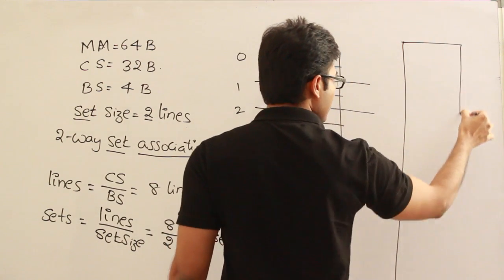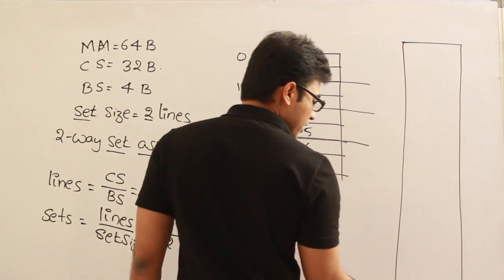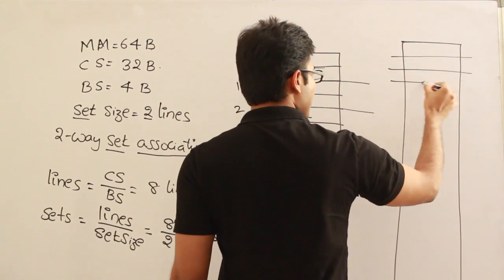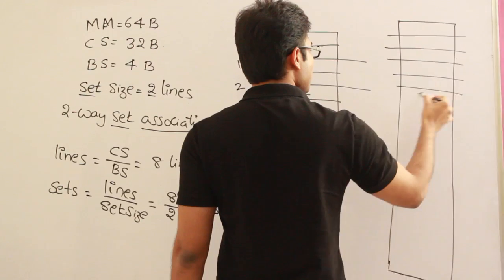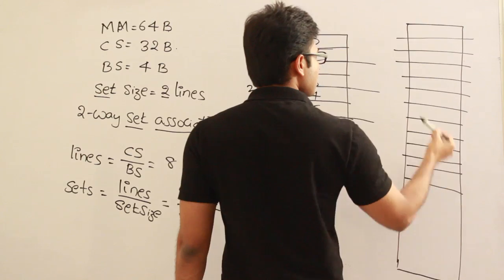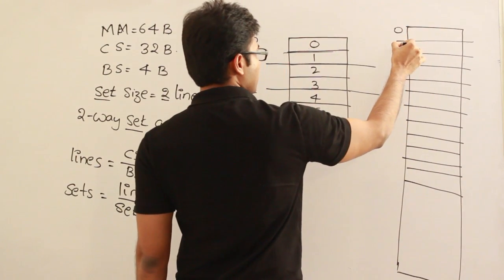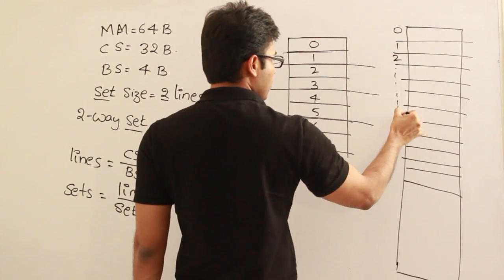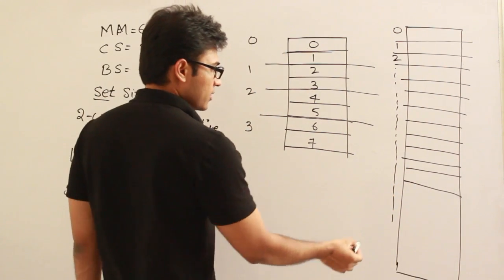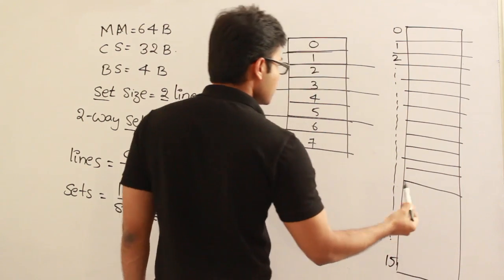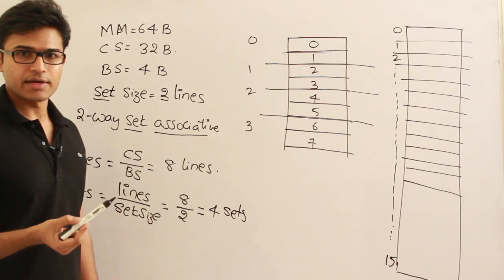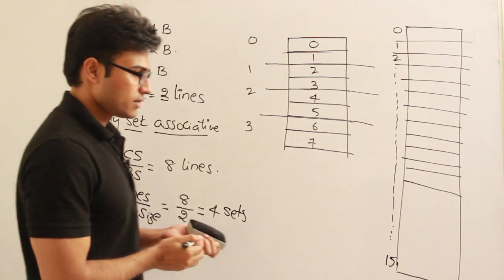Main memory has 64 bytes. In main memory we don't have sets, only blocks. Combining 4 bytes into one block, the number of blocks in main memory is 64 divided by 4, which gives us 16 blocks — block 0, 1, 2, 3, and so on up to 15.